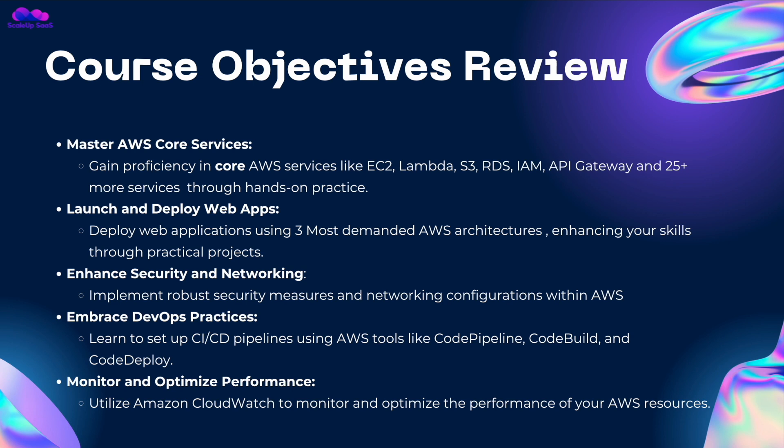The third objective is enhanced security and networking — implement robust security measures and network configuration within AWS. The fourth is to embrace DevOps practices — learn to set up CI/CD pipelines using AWS tools like CodePipeline, CodeBuild, and CodeDeploy. The fifth and last objective is to monitor and optimize performance — utilize Amazon CloudWatch to monitor and optimize the performance of your AWS resources.